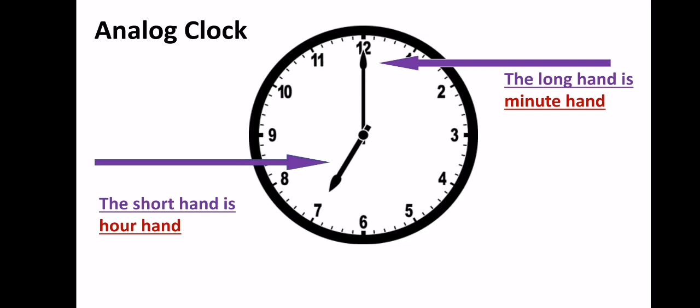The first hand, the long hand is minute hand and the short hand is hour hand. The long hand is minute hand and the short hand is hour hand. The clock now is 7 o'clock.